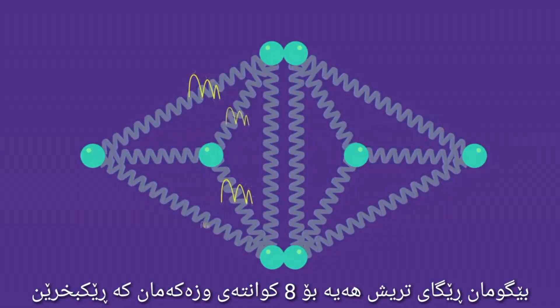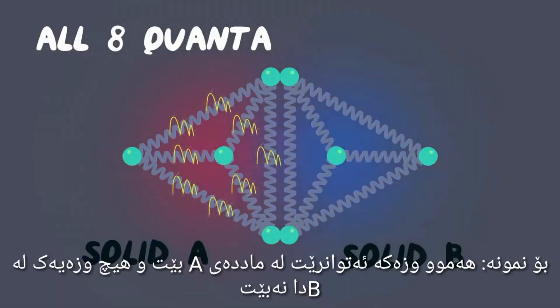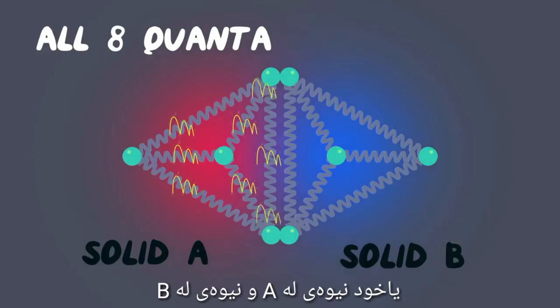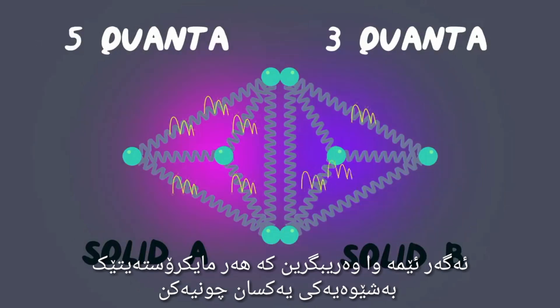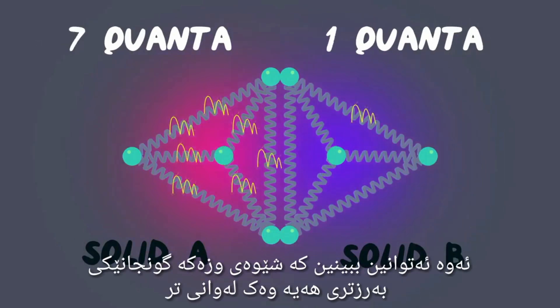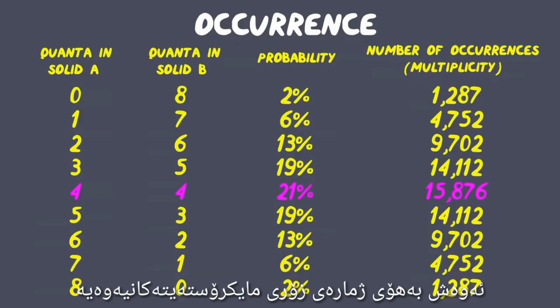Of course, there are other ways our eight quanta of energy can be arranged — for example, all of the energy could be in solid A and none in B, or half in A and half in B. If we assume that each microstate is equally likely, we can see that some energy configurations have a higher probability of occurring than others, due to their greater number of microstates.